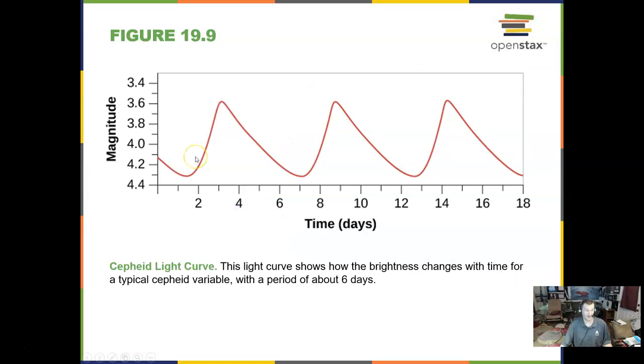A Cepheid light curve is a yellow supergiant star that pulsates in and out. And one pulsation is a few days and it gets brighter and dimmer and a very important star.